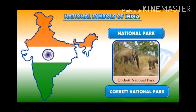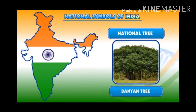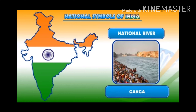Which is our national park? Corbid National Park. Which is our national tree? Banyan tree. Which is our national river? Ganga.